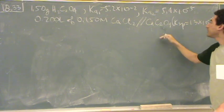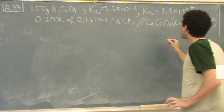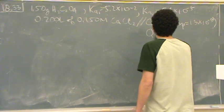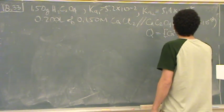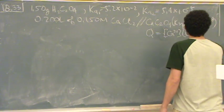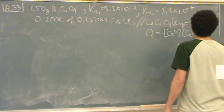So what you want to do to find out if that precipitates: Q is the concentration of calcium times the concentration of the oxalate. Is that okay?